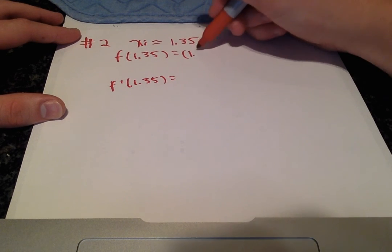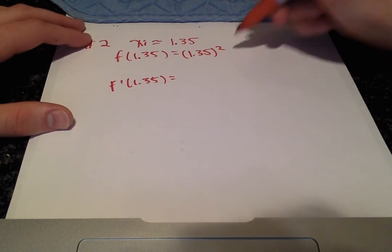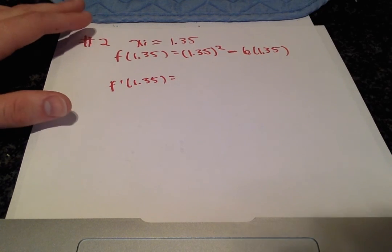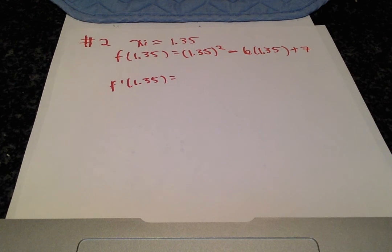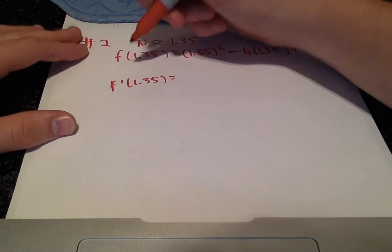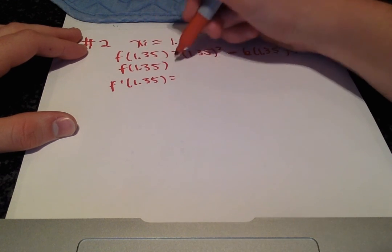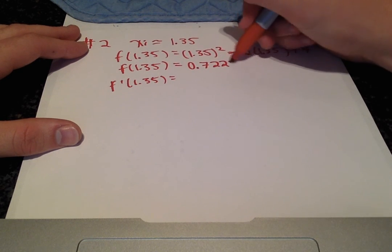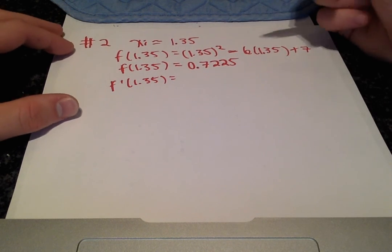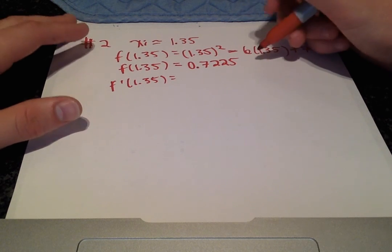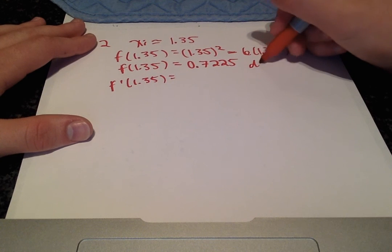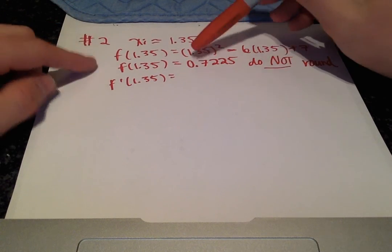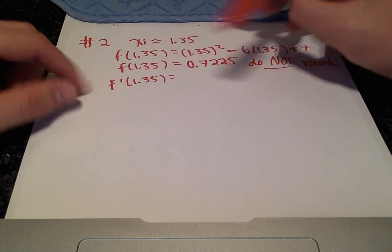So that's going to be 1.35 squared minus 6 times 1.35 plus 7. And we get f of 1.35 is equal to 0.7225. And one thing I want to point out is you see four decimal places and you might be tempted to round three, but do not round here. We cannot round until we get to the end of our approximation for the second iteration.